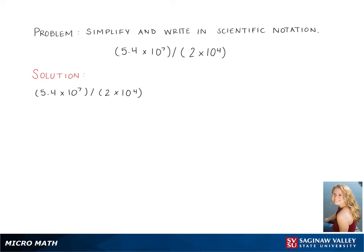Here we need to simplify and write the expression below in scientific notation: 5.4 times 10 to the 7th, divided by 2 times 10 to the 4th.